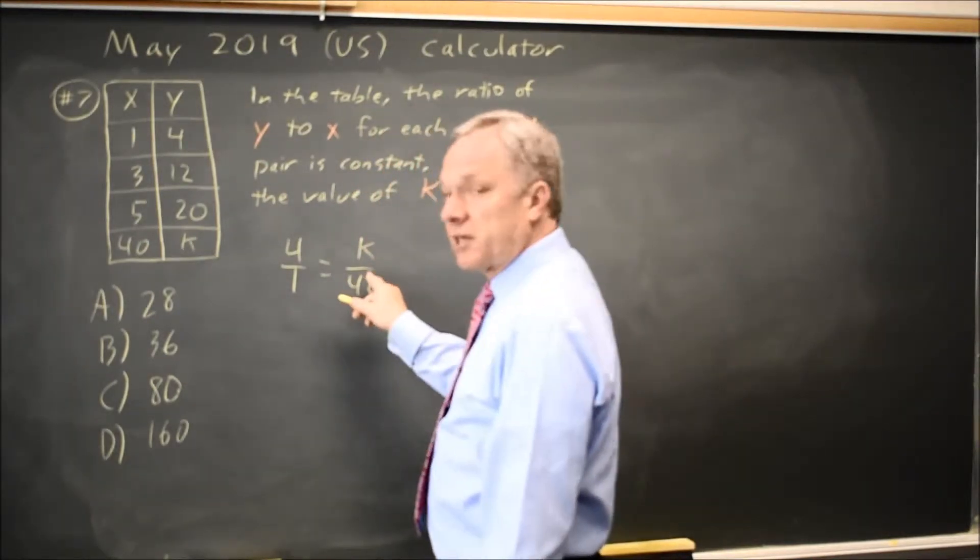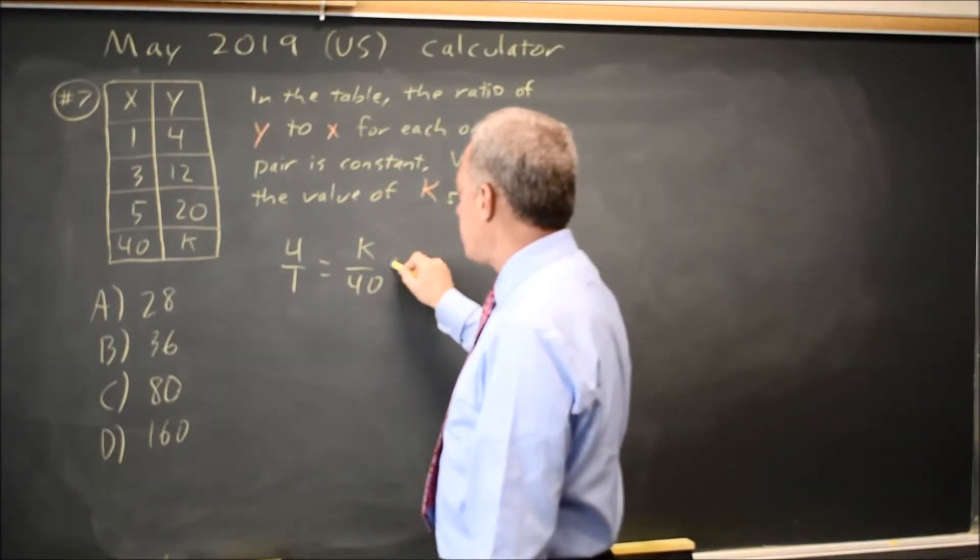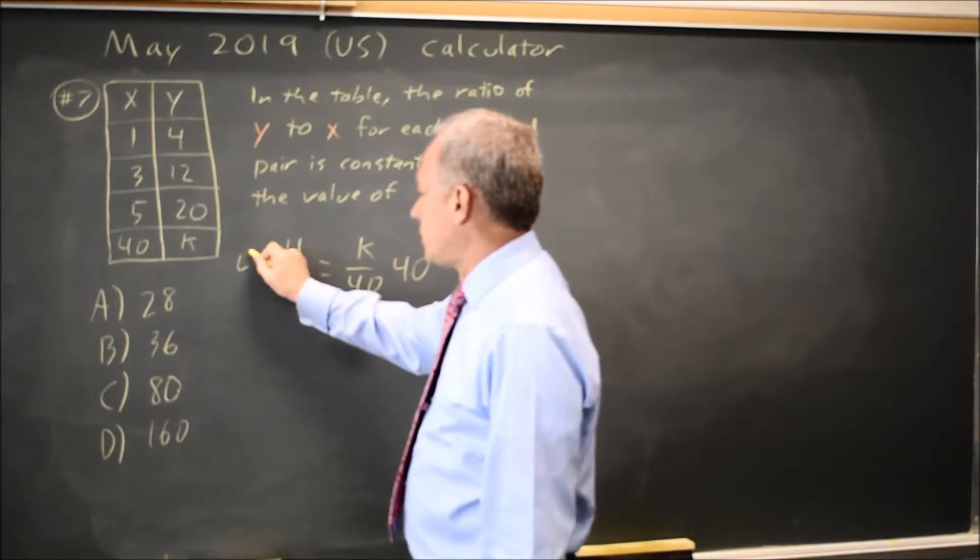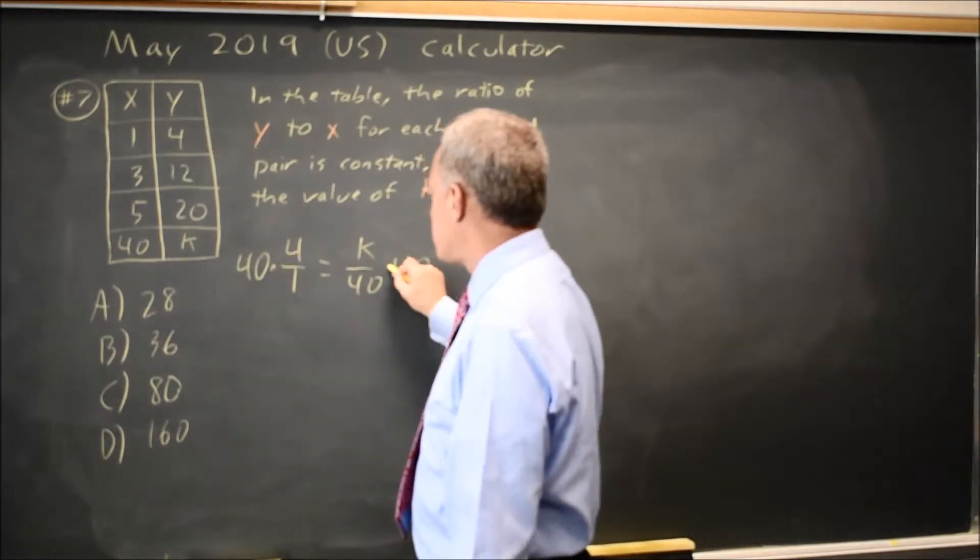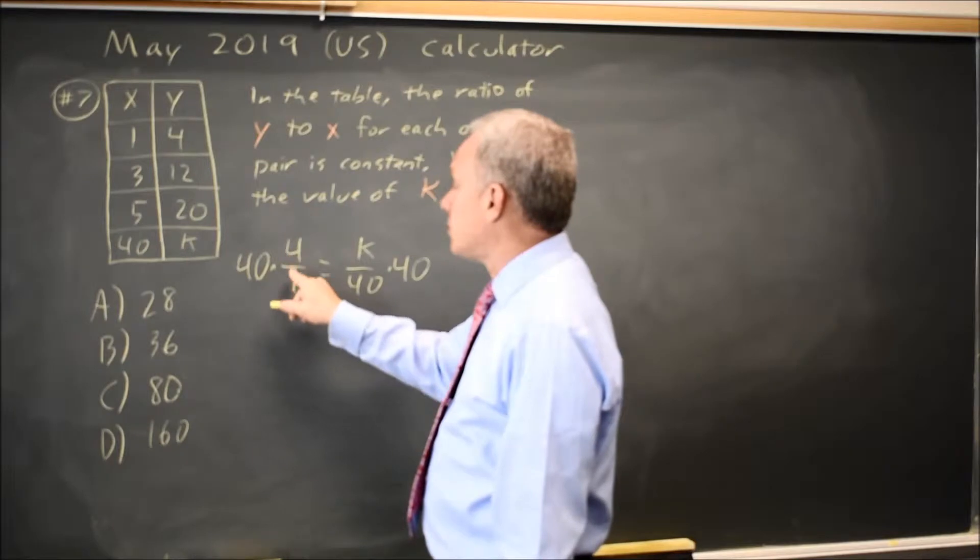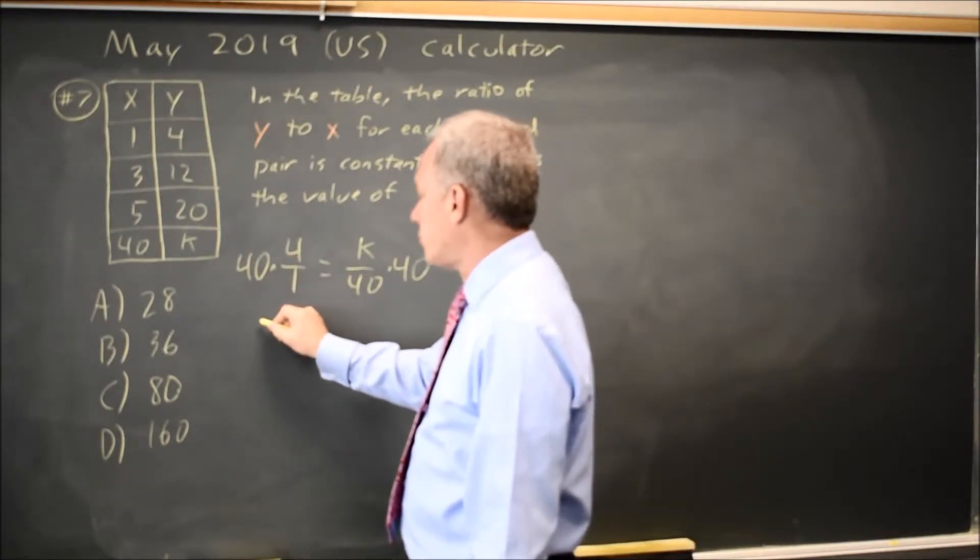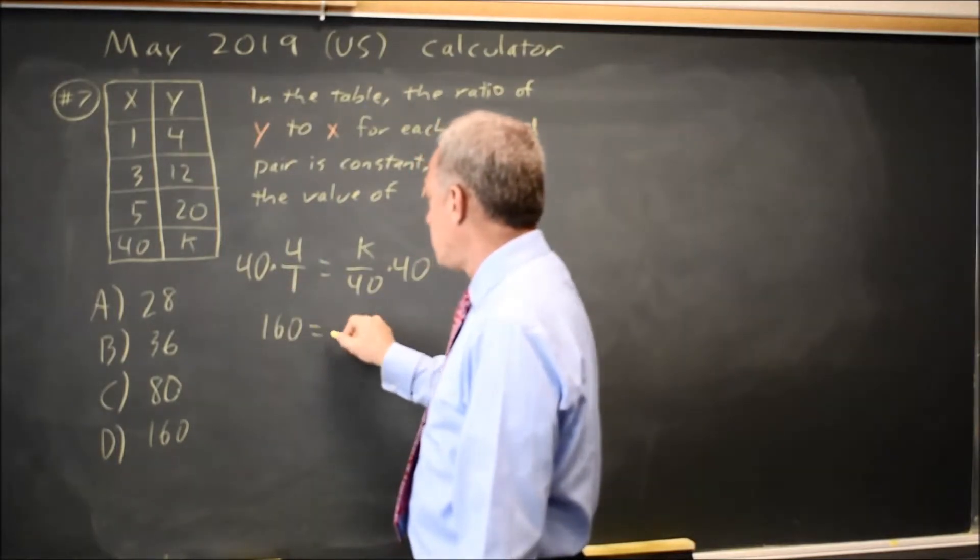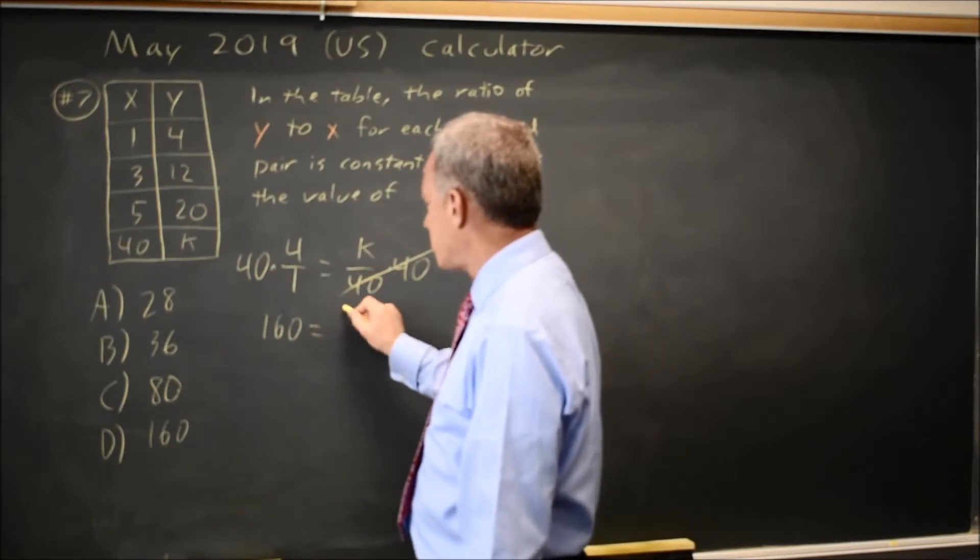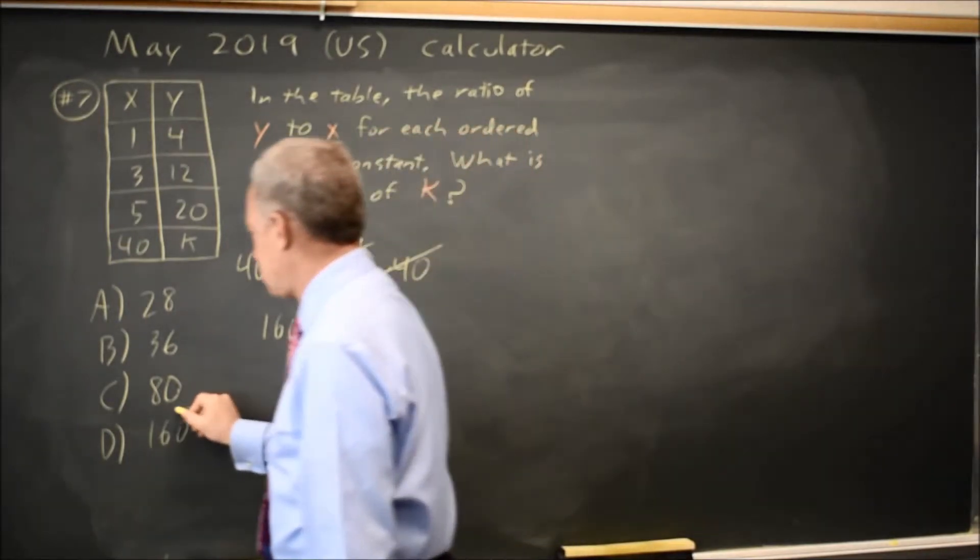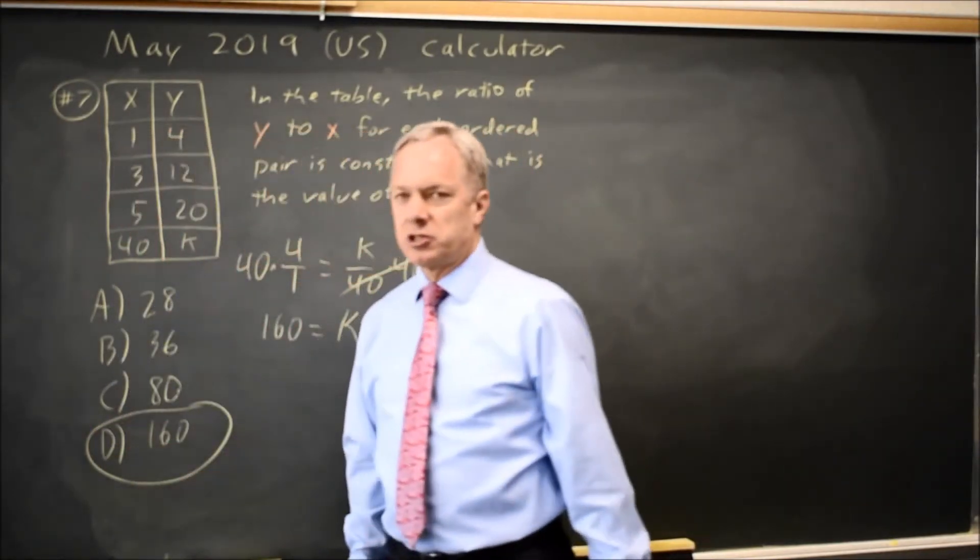To get k by itself, since k is divided by 40, I'll multiply by 40. I have to do the same thing on both sides of the equation. 40 times 4 over 1 is 40 times 4 is 160, and 40 over 40 is 1, so 160 equals k. This would be choice d.